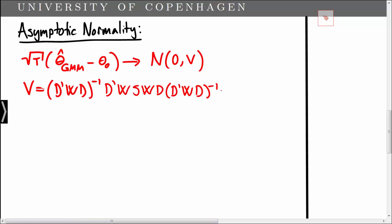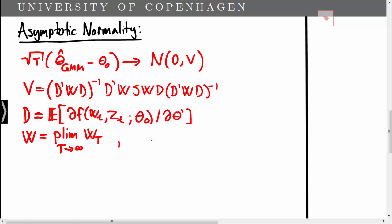Here the matrix D is the expectation of the first derivative of the function F. We may think of the matrix W as the limit of the weight matrix WT. Lastly, S is the asymptotic covariance matrix of the function F.